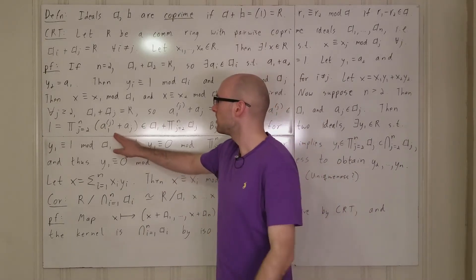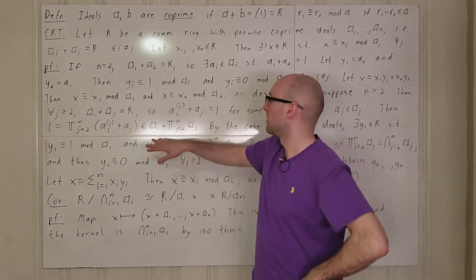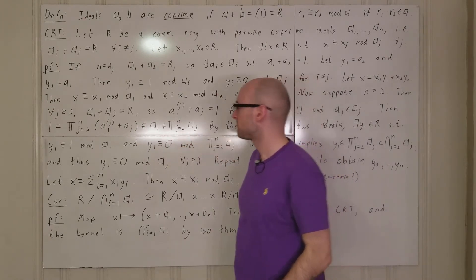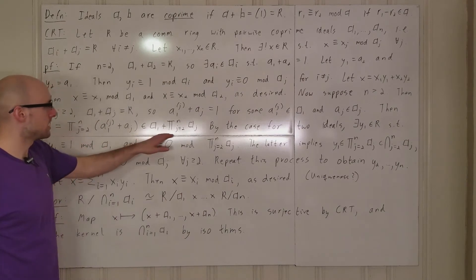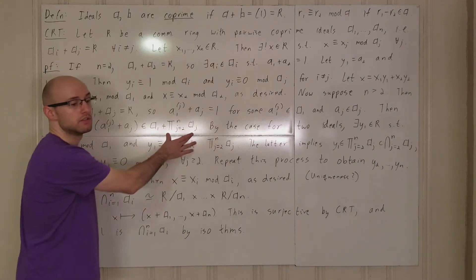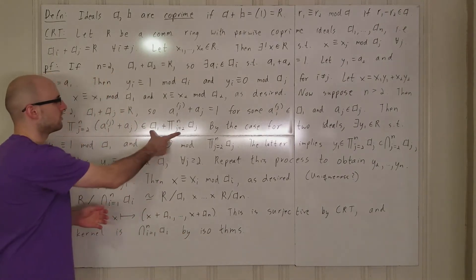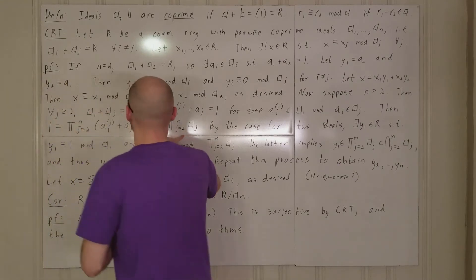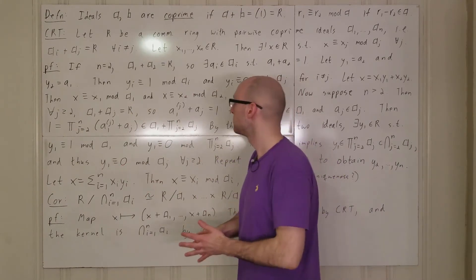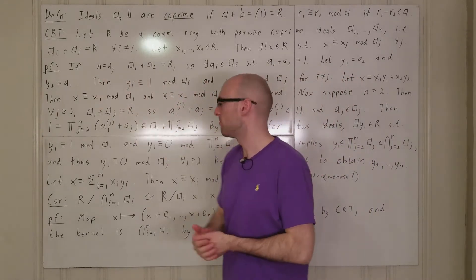Since addition is commutative, we can collect all elements of a1 together and all the rest separately. The remaining piece is the product of a2 through an. So 1 is in the sum of these two ideals — a1 and the product a2 through an. Since finite products of ideals are ideals, their sum contains 1 and therefore contains the entire ring, so we can apply the n equals 2 case.